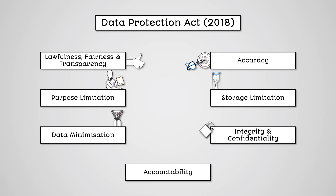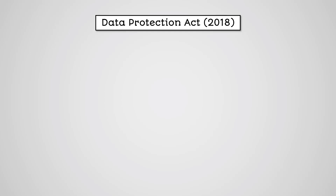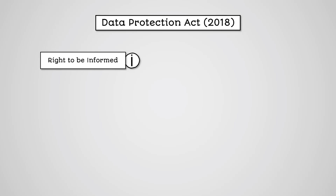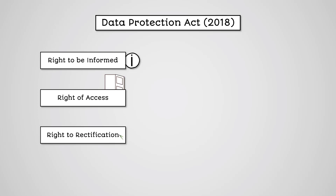The seventh principle is accountability. You must be able to demonstrate your compliance with the law. In addition to this, the Data Protection Act gives individuals several rights in regards to their personal data. These include the right to be informed — you must be given clear information on what your data is being used for. The right of access — you can access the data being held on you. And the right to rectification — you can request for your data to be updated where incorrect.